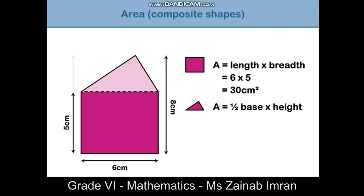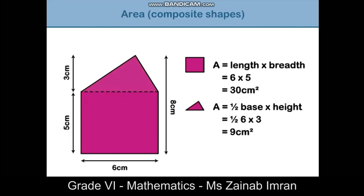The area of the rectangle is 30 centimeters squared and the area of the triangle is 9 centimeters squared. To get the area of the composite shape, add the areas of the two separate shapes together. The area of the composite shape is 30 plus 9, which equals 39 centimeters squared.